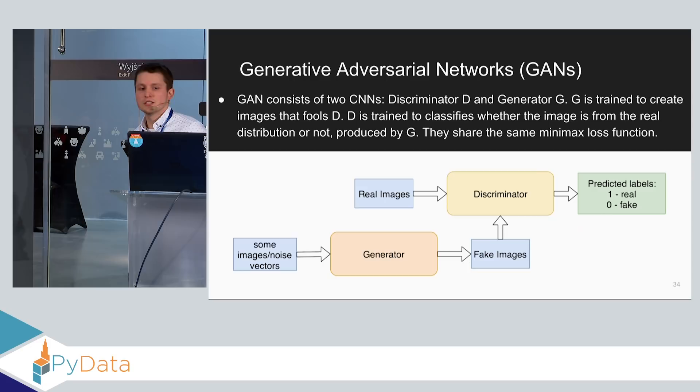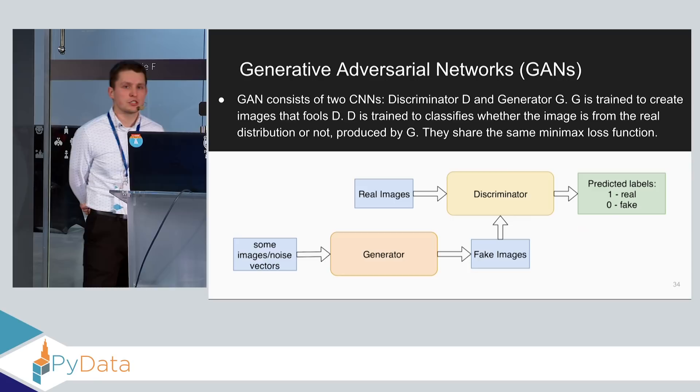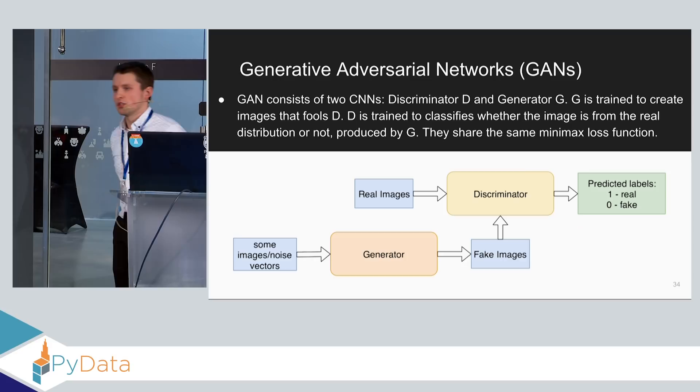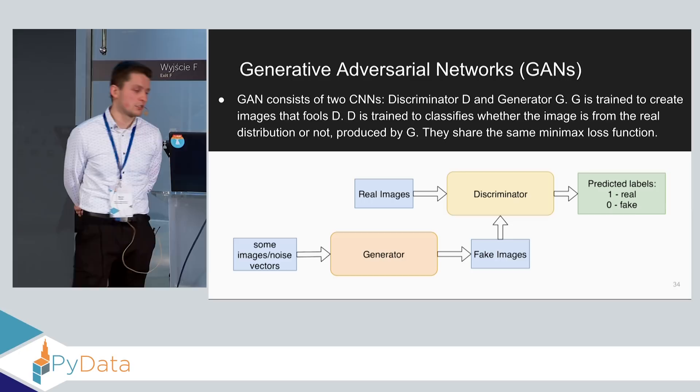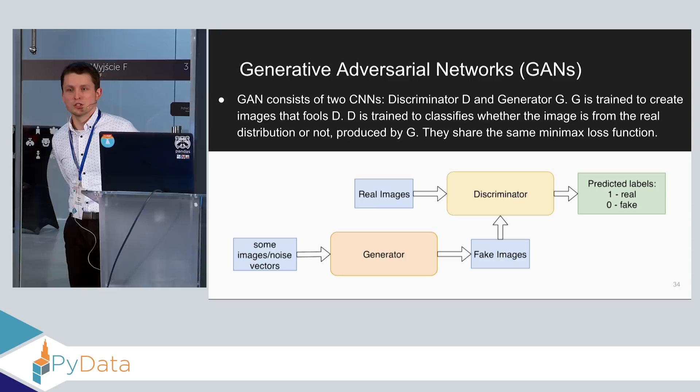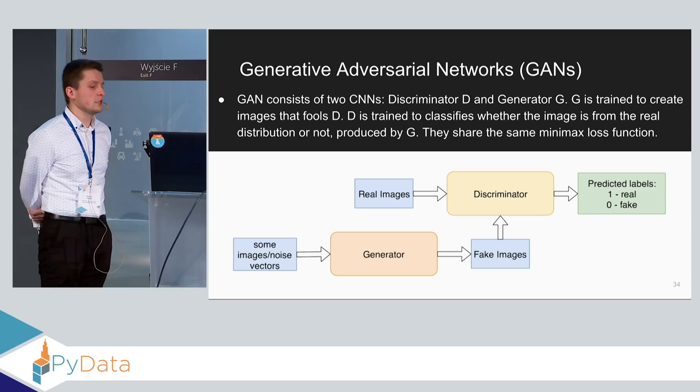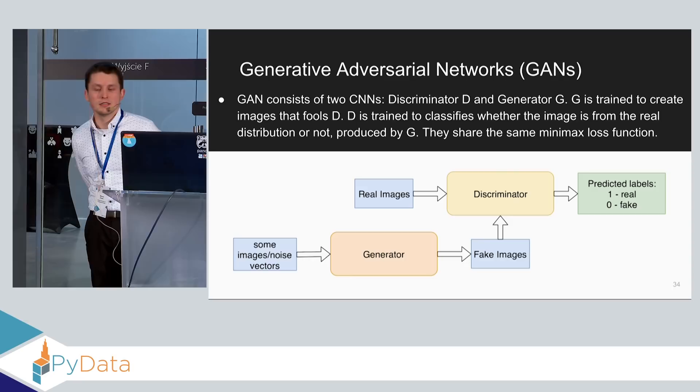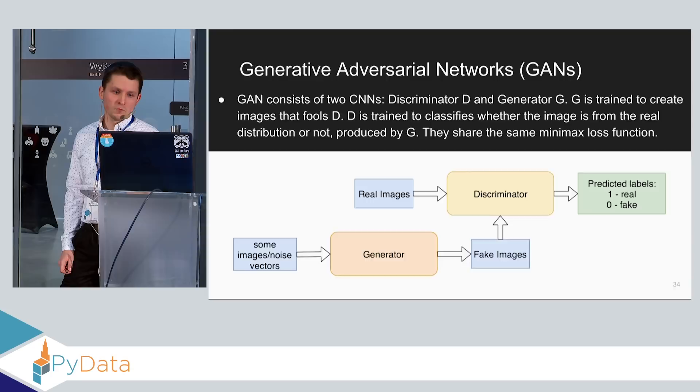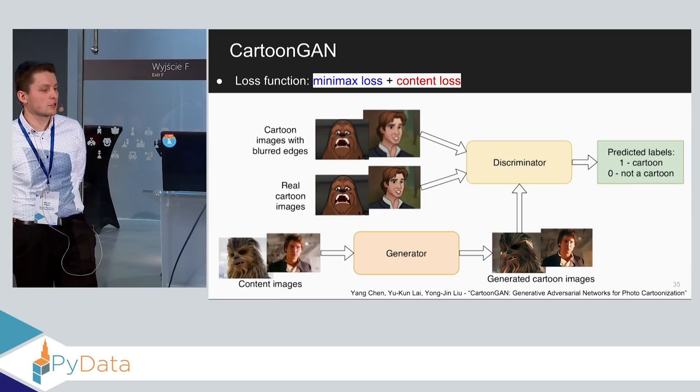And that is why we switched to so-called generative adversarial networks. GANs is a framework consisted of two networks, the discriminator and the generator, where the generator is trained to create images that will fool the discriminator. And discriminator is trained to classify whether an image is from the real distribution or from the fake distribution produced by generator. And they share the same cost function, which we will be calling minimax loss function. And the discriminator tries to minimize it, whereas the generator tries to maximize it. And to be more precise, it tries to minimize the negative version of it.